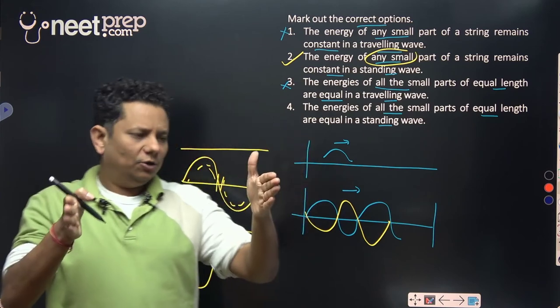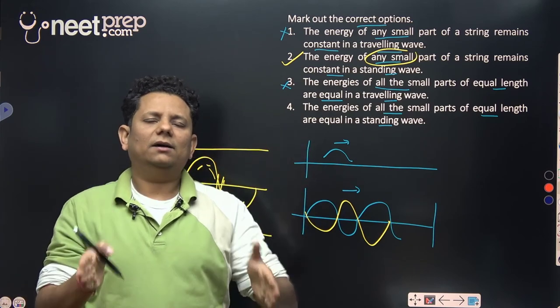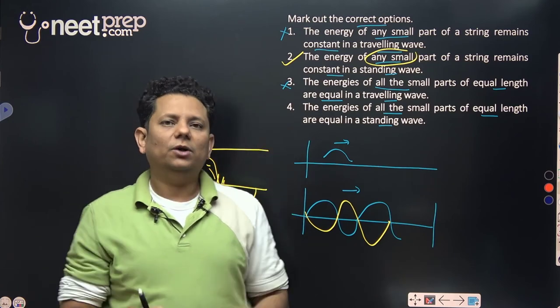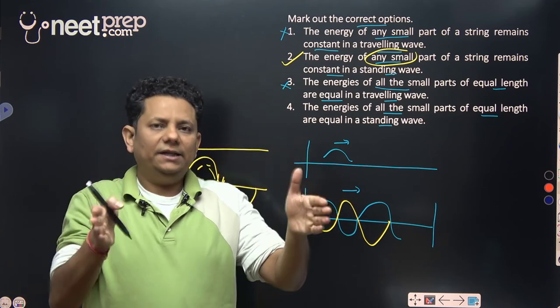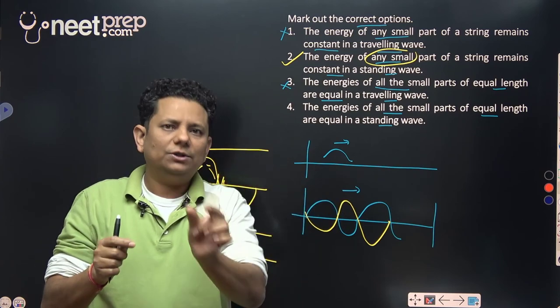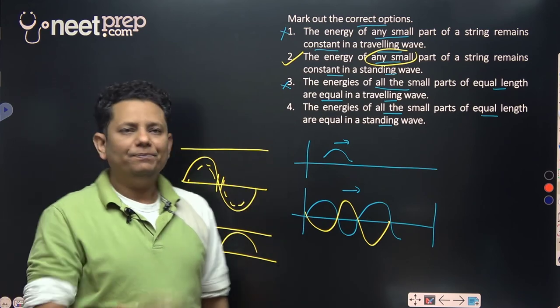The fourth statement says energy of all the small parts of equal length. This means if I take one meter or one foot or whatever particular length, then its energy will be conserved. But the important part here is that every point's energy is conserved. It's not that in one meter it's less here and more there. No, every portion's energy is conserved.